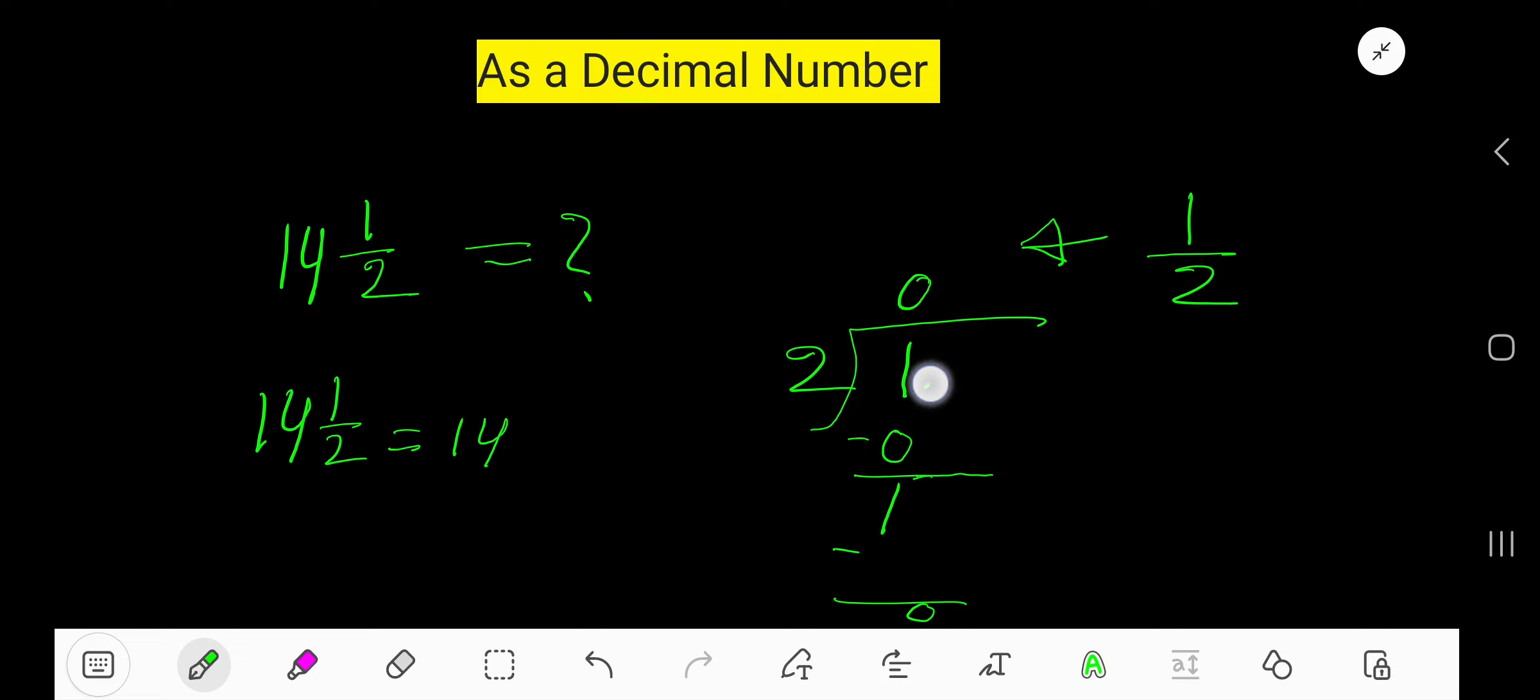To continue this process, take the decimal point and zeros. Bring down the first zero. Before the zero, there's a decimal. This decimal must come to the quotient directly. Two goes into ten how many times? Five times two is ten.